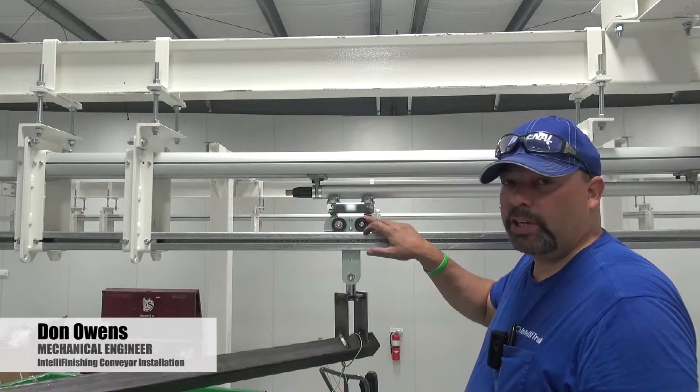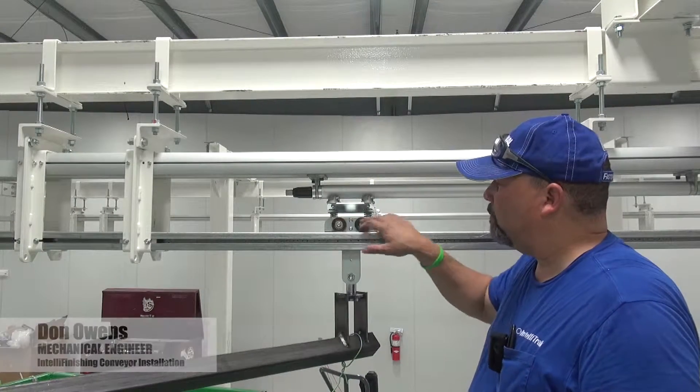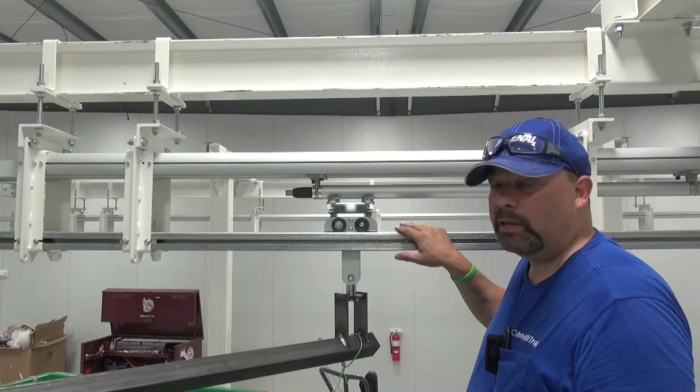Now the load wheel. To do a load wheel change is fairly simple because you have four wheels that are on the top of the load rail.